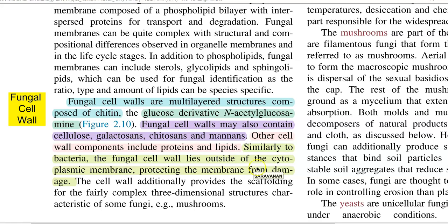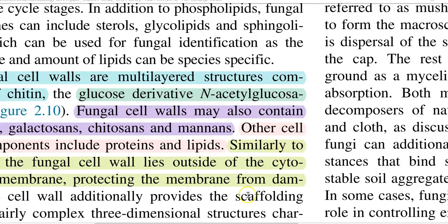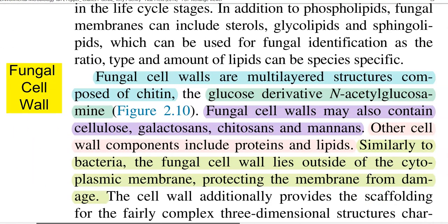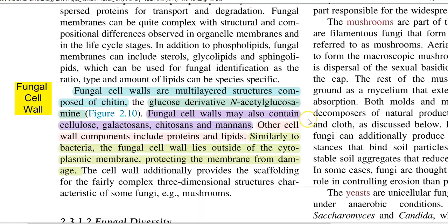Fungal cell walls are multi-layered structures that are commonly composed of chitin. Chitin is made up of a glucose derivative called N-acetyl glucosamine. This N-acetyl glucosamine is the monomeric unit of chitin present in the fungal cell wall.